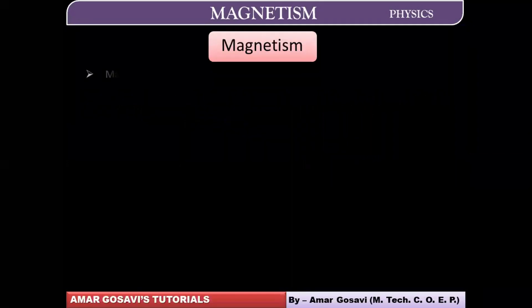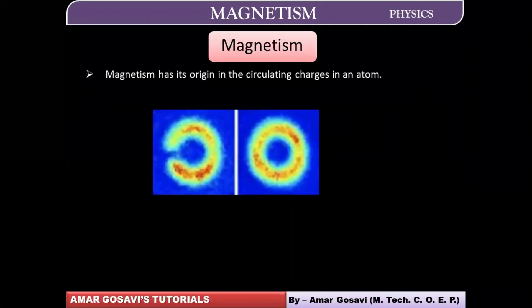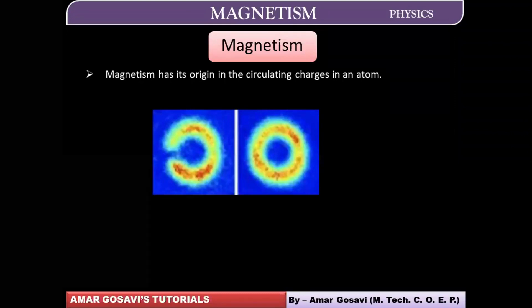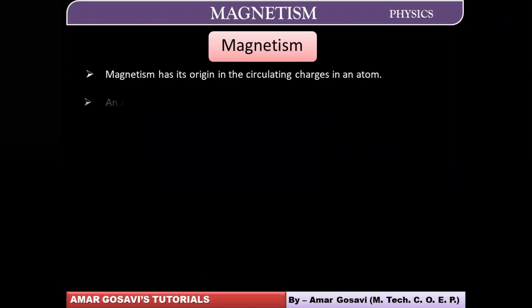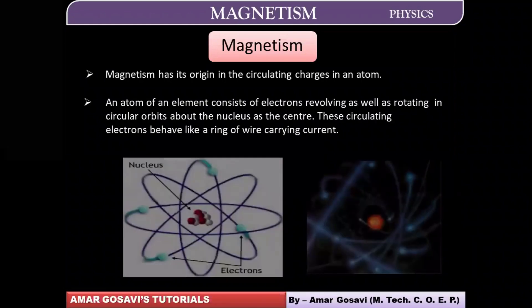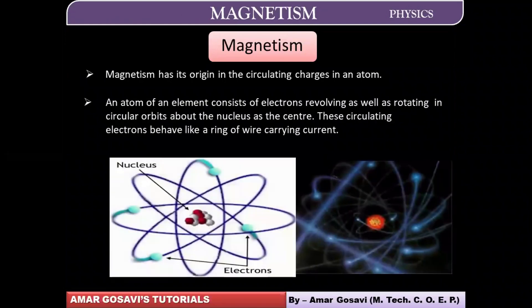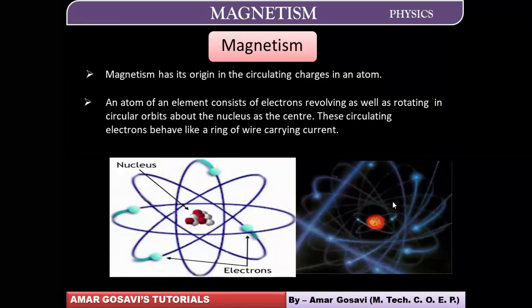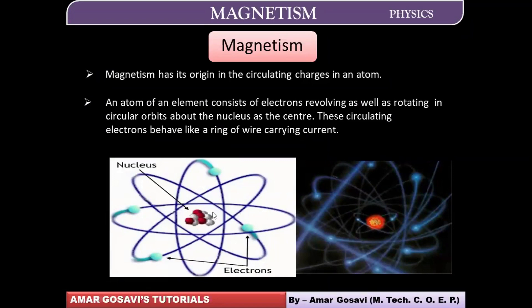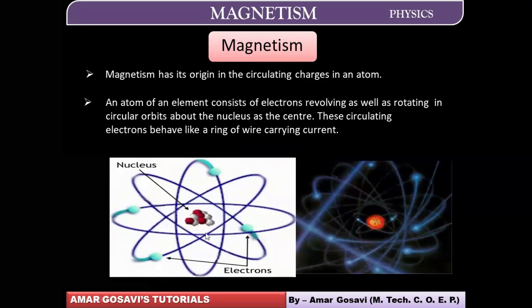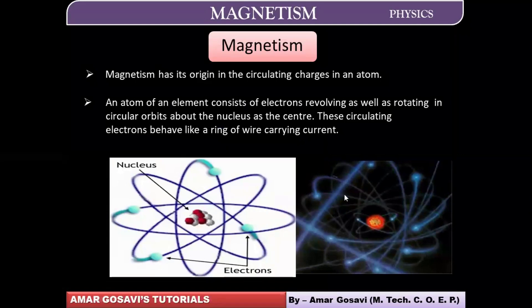Let's get back to the theory of circulating charges in an atom. Electrons move in circular orbits around the nucleus — you can have a look at this picture. Now when they move in circular orbits, they also spin. So they are performing two types of motion: one is the orbital motion, also called revolution, and the other is the spin motion, also called rotation.